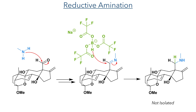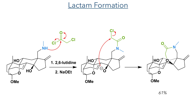This aldehyde was then reacted in a reductive amination. Reaction with methylamine forms an imine which is reduced with sodium trifluoroacetoxyborohydride to produce the secondary amine, which was not isolated but instead reacted with chloroacetyl chloride together with lutidine as a base. The amine first adds to the acid chloride, and then the tertiary alcohol on the same face of the molecule is deprotonated by sodium ethoxide, which reacts with the alkyl chloride to complete the lactam ring in a 61% yield.